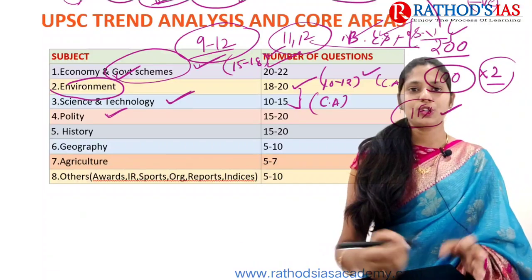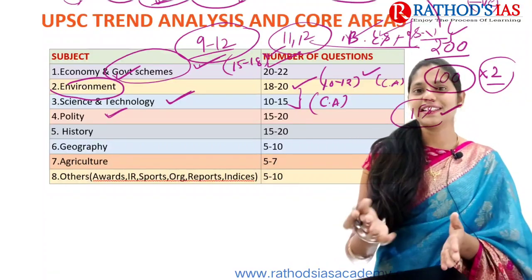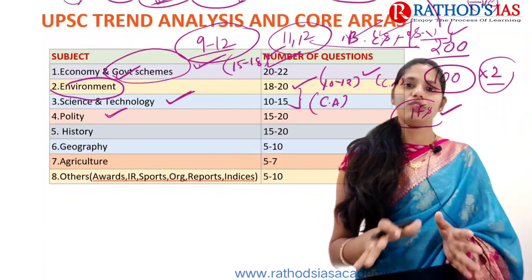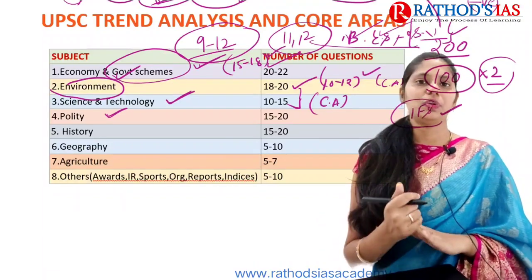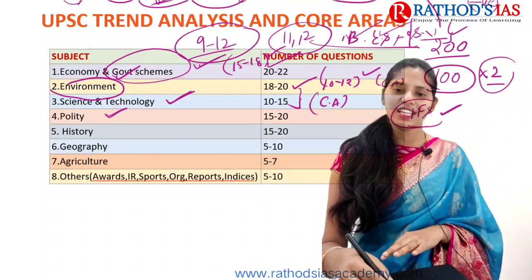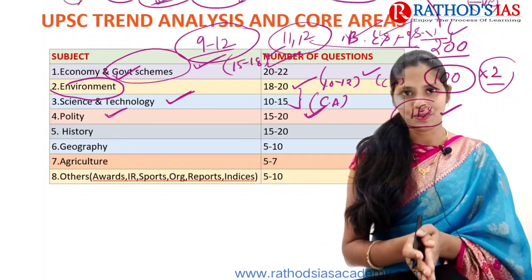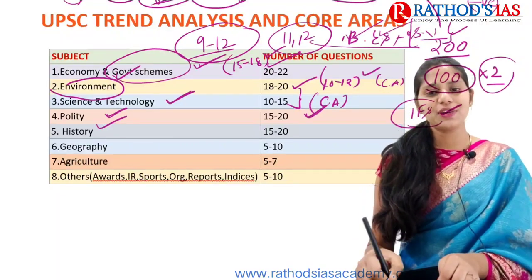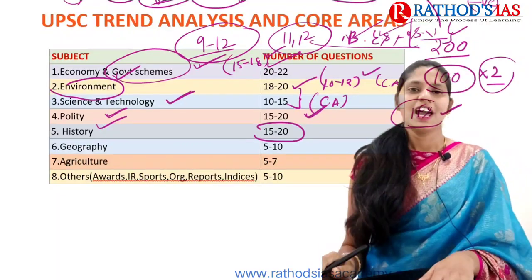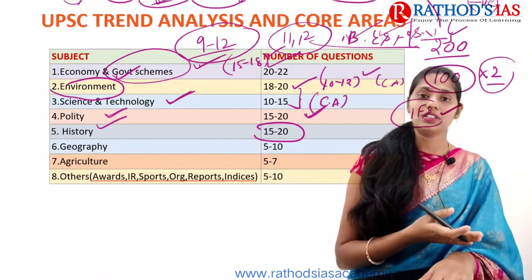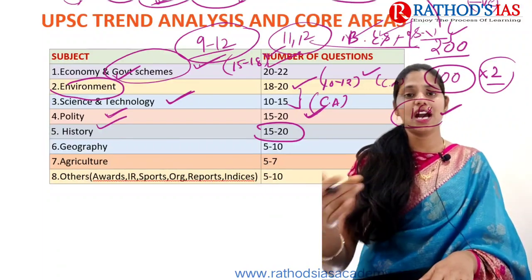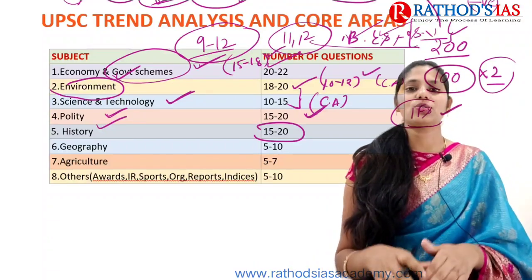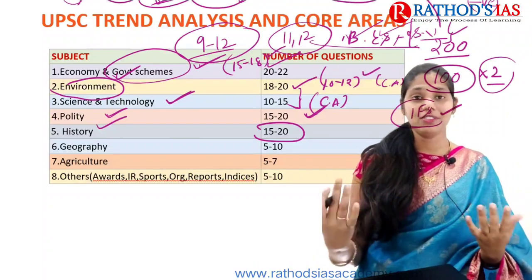For Polity, we have one guide which is Lakshmikanth. If you are thorough with Polity, every year you can get 15 to 20 questions correct. From History you will be getting 15 to 20 questions. History includes Ancient History, Modern History, Medieval History, and Art and Culture. The syllabus is very vast and resources are very wide.